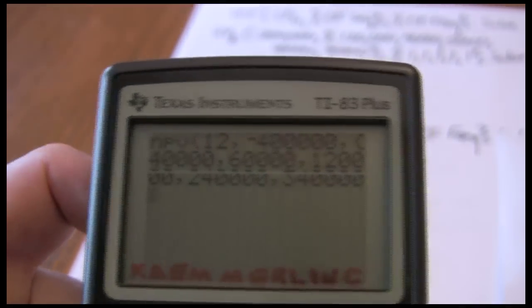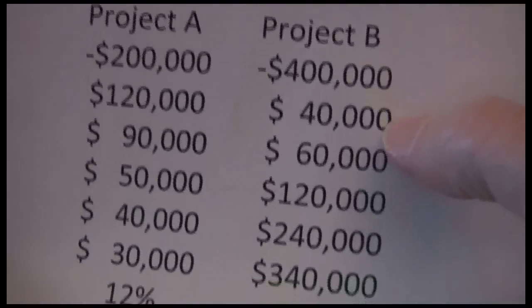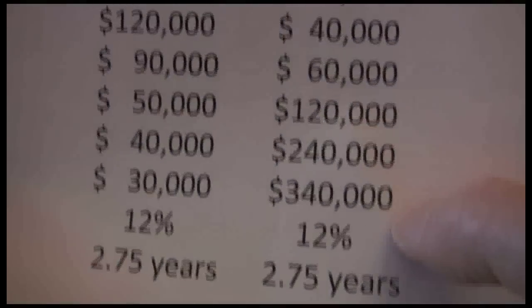Quick recap: that's negative $400,000, $40,000, $60,000, $120,000, $240,000, $340,000. Each of those is a frequency of one.